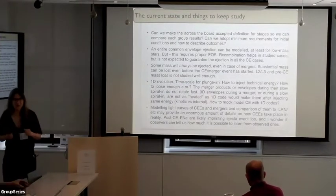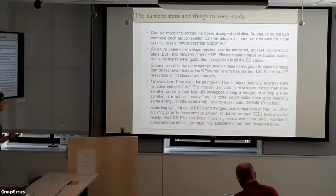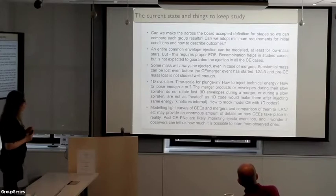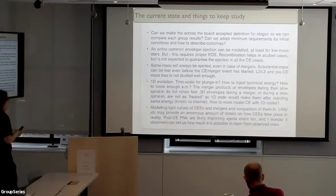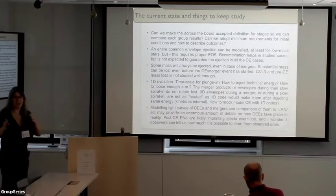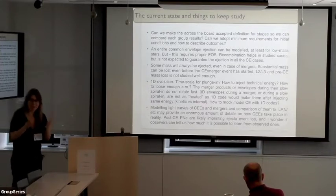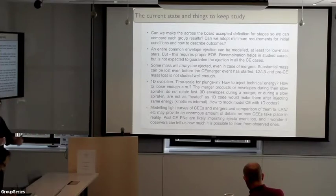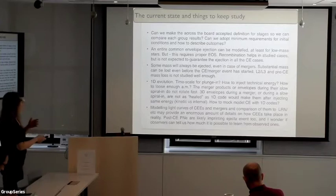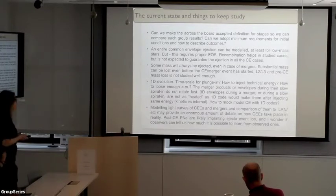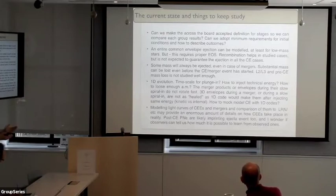My final points about the current state: Can we try to establish widely accepted definitions for stages so we can compare results between different groups? When you publish a paper and I read it, I should really know what you mean. Can we also add minimum requirements for initial conditions and how to describe outcomes? As a result, we know that common envelope ejection can be modeled at least for low-mass stars. I only work with low-mass giants, and this required the creation of states where recombination helps in standard cases.